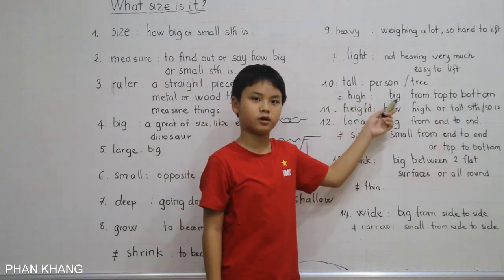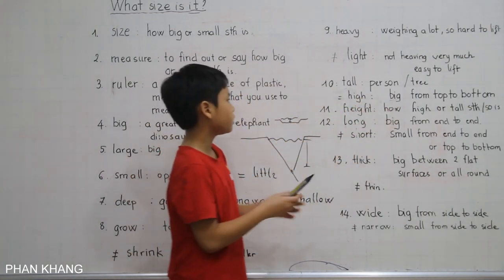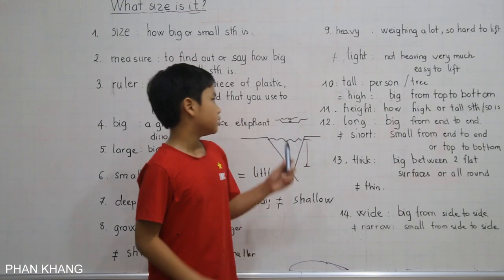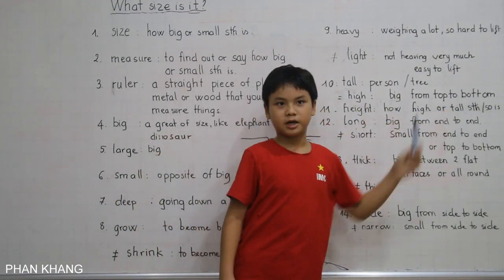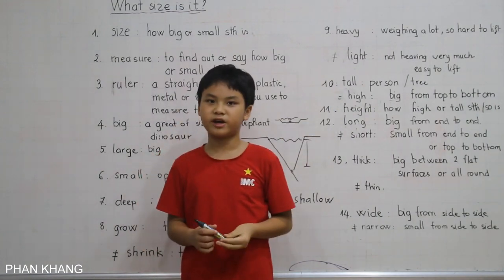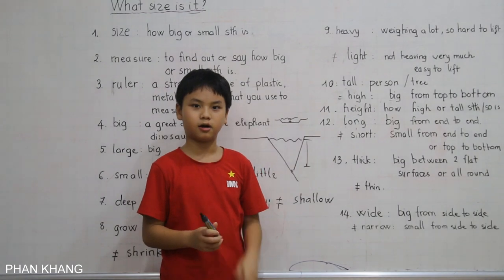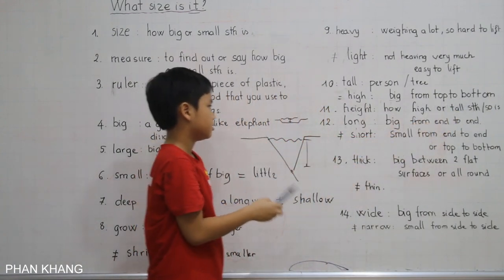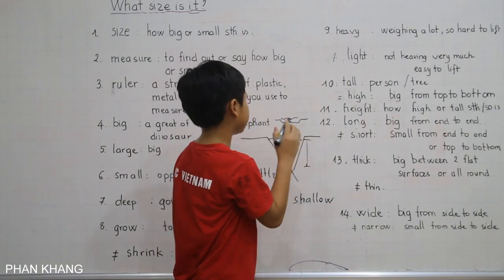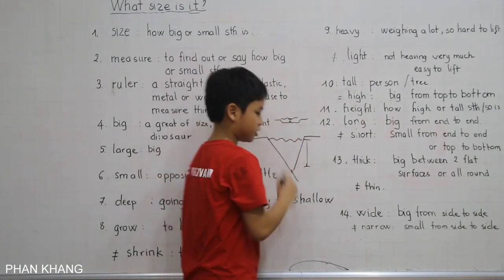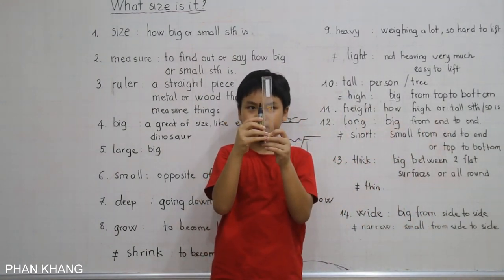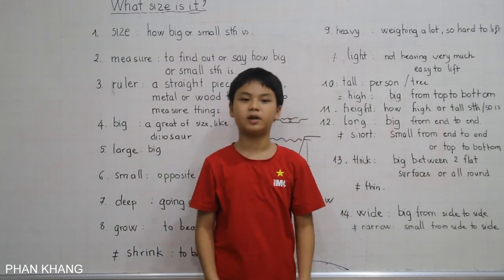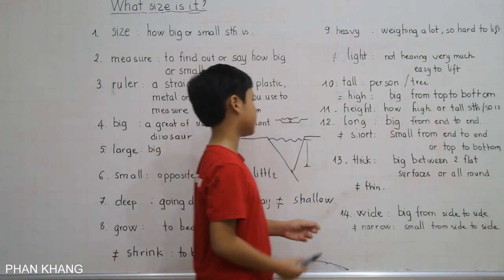Tall means we are talking about a person or a tree. We might say 'That guy is very tall' or 'That tree is very tall.' Tall is equal to high. High means big from top to bottom — we might say very high or too high. Height means how high or tall something is. We usually measure in centimeters using a ruler. We might use a ruler to measure a pencil or a board, but to measure a person we usually use a tape measure.